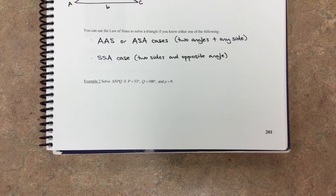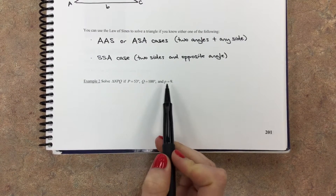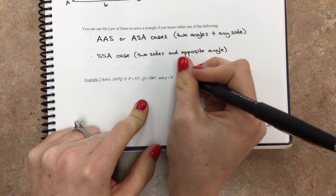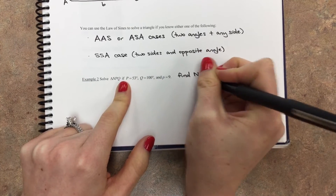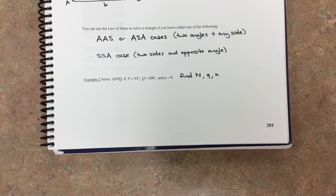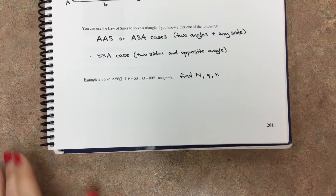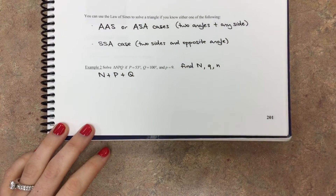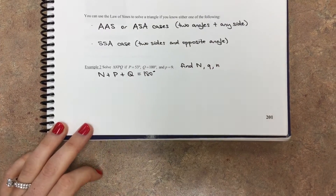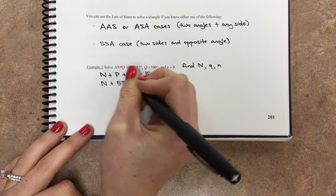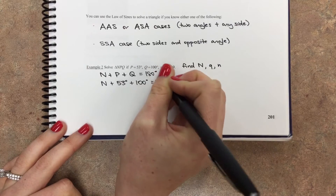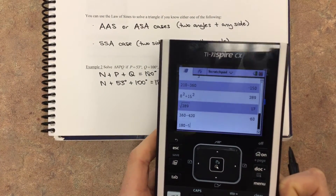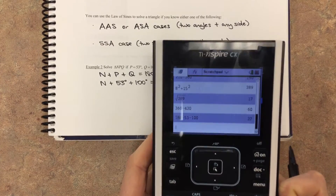This example has two of the angles and one of the sides, so it falls into one of those cases. To solve this triangle means finding all the missing pieces. We need to find angle N, little q, and little n. Capital N is the easiest to find because all angles add up to 180 degrees. So N plus P plus Q equals 180. We know P is 53 degrees and Q is 100 degrees, so N equals 180 minus 53 minus 100, which gives us 27 degrees.